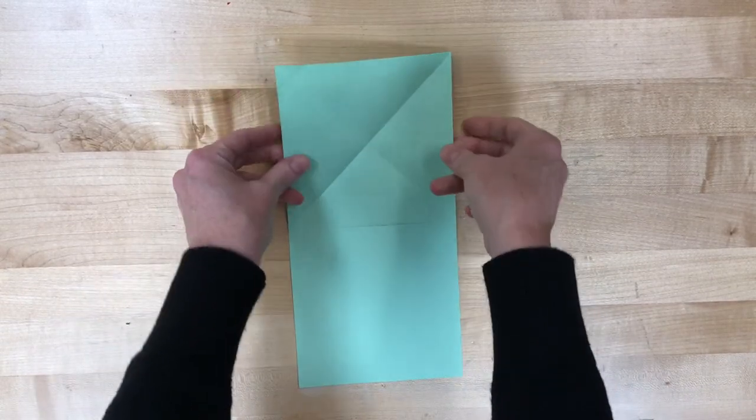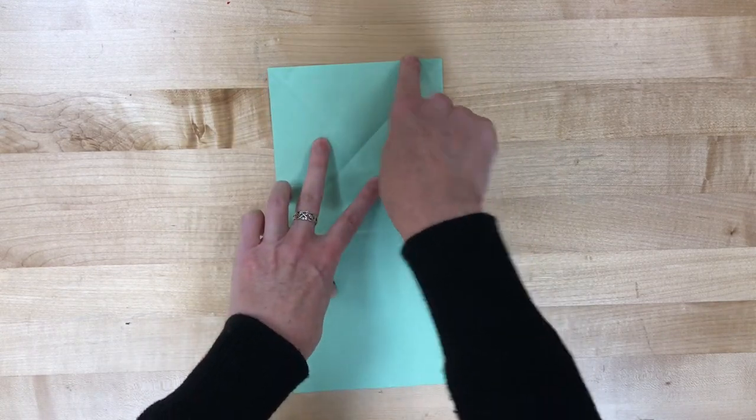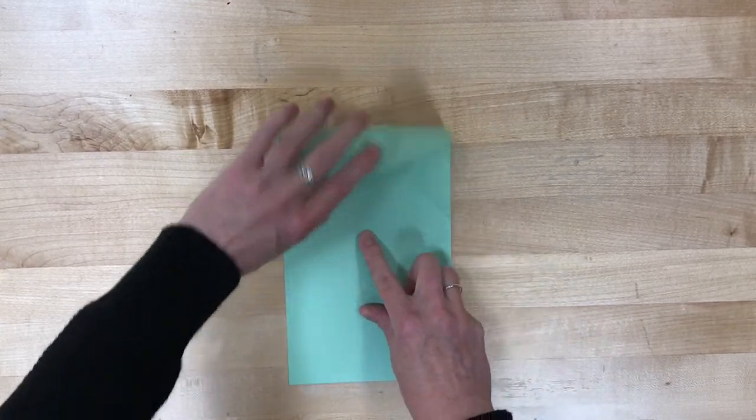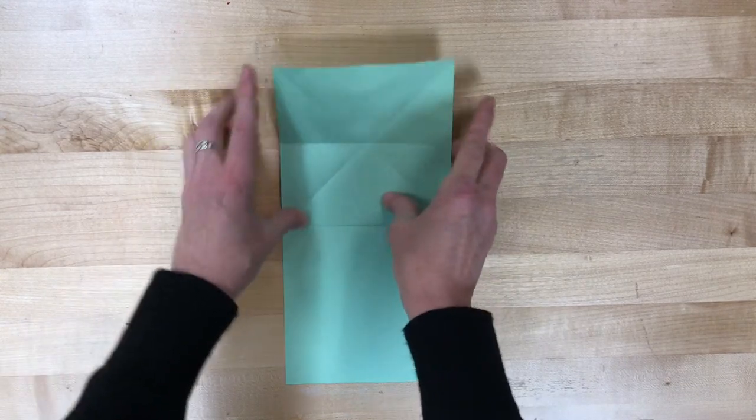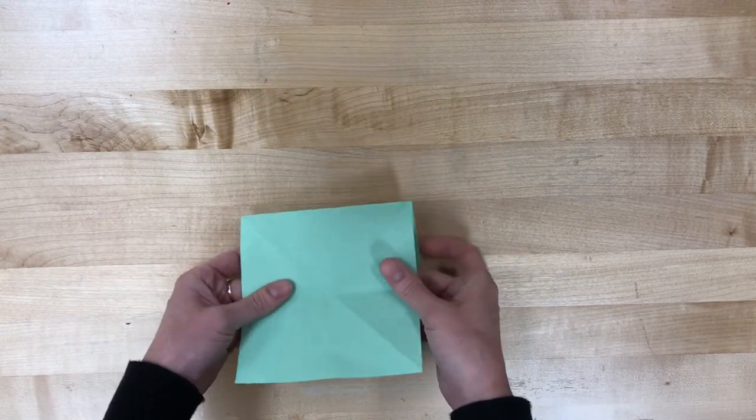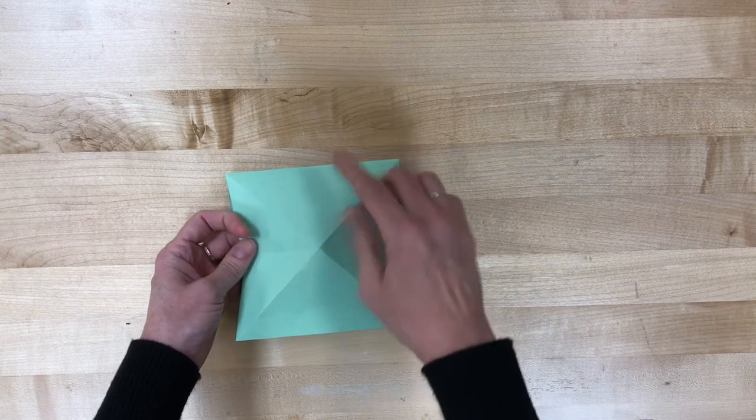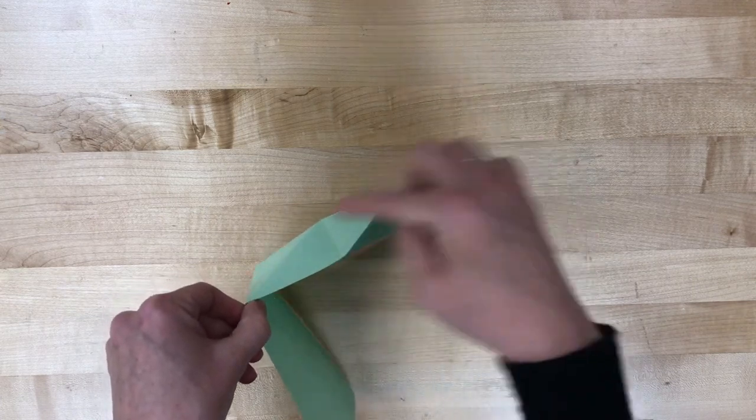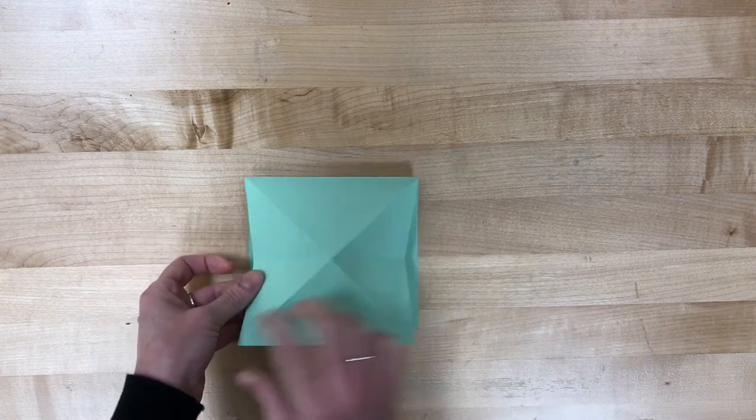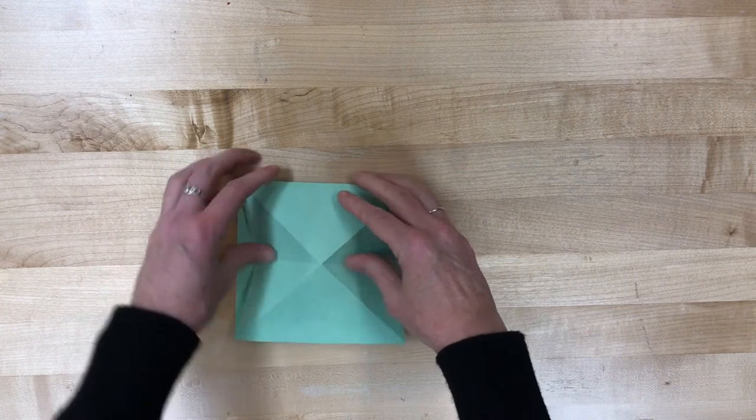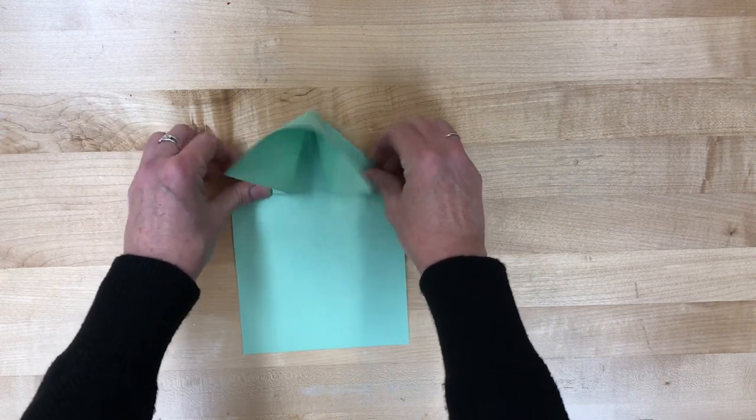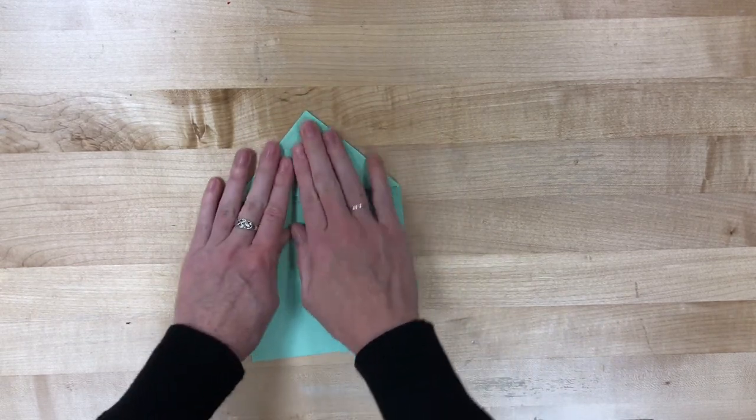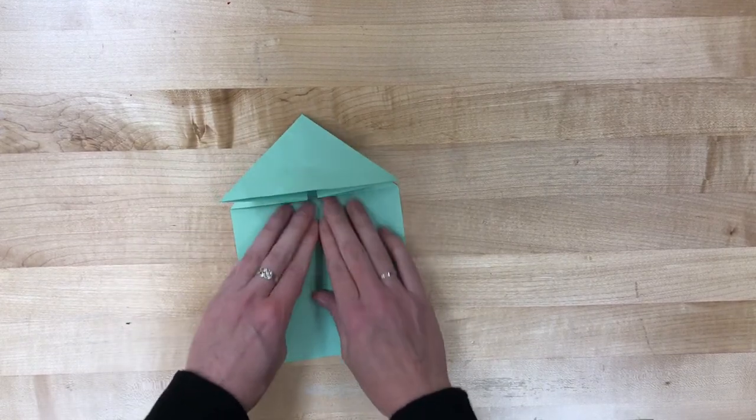And then what we're gonna do is we're gonna take that top piece and fold it down to the middle line. Then open it back up. You've got that X in the middle of the paper and if you pull it down you're gonna kind of see it wants to make a pyramid shape. And if you help that pyramid shape, push the edges together and pull back, push the middles together and pull it to the back, you will end up with a triangle shape on the front.